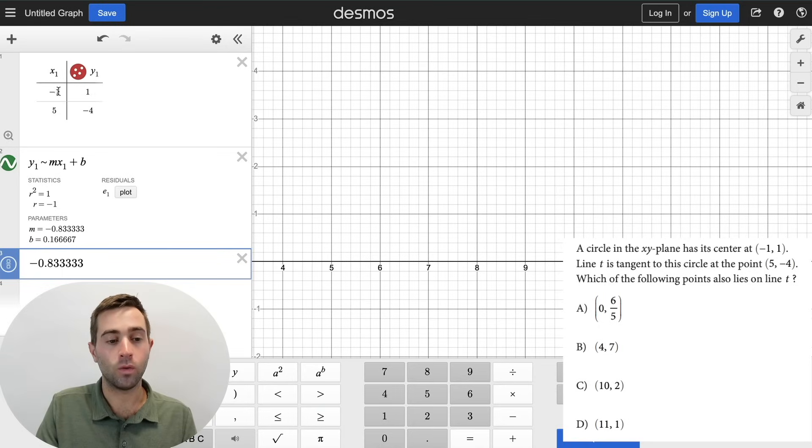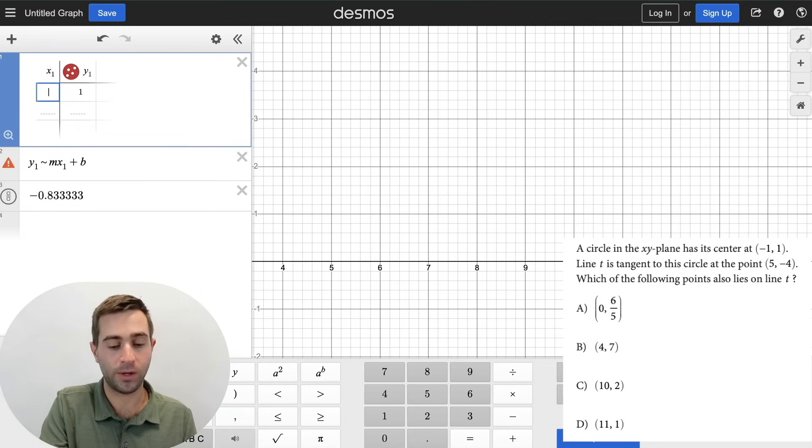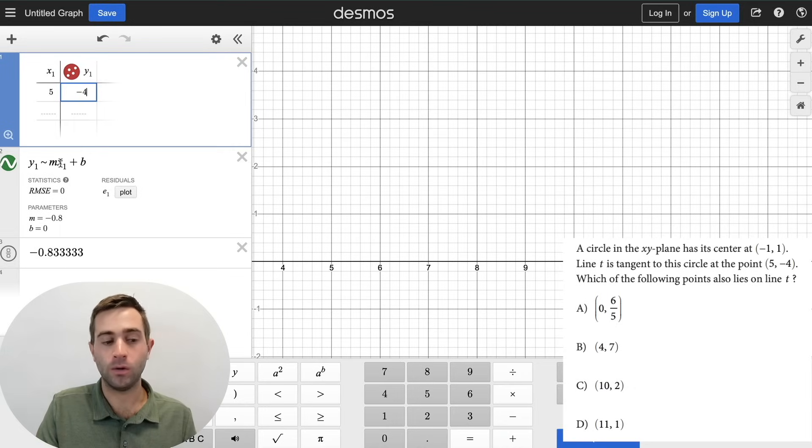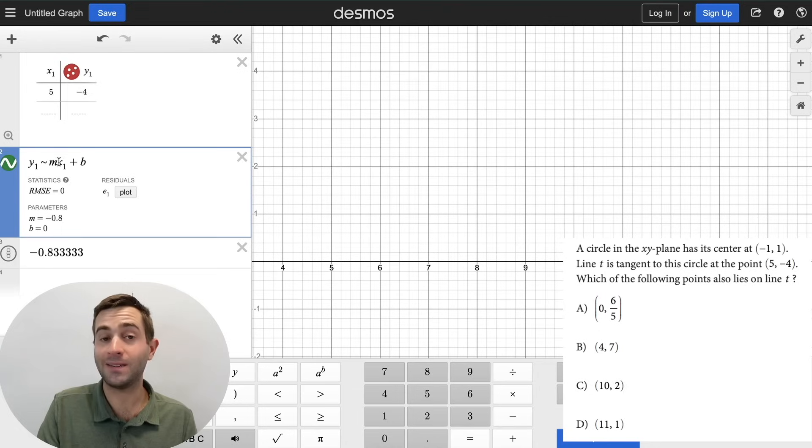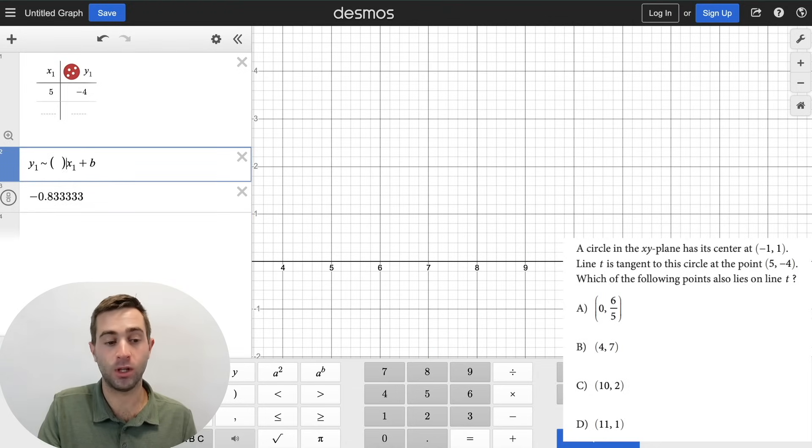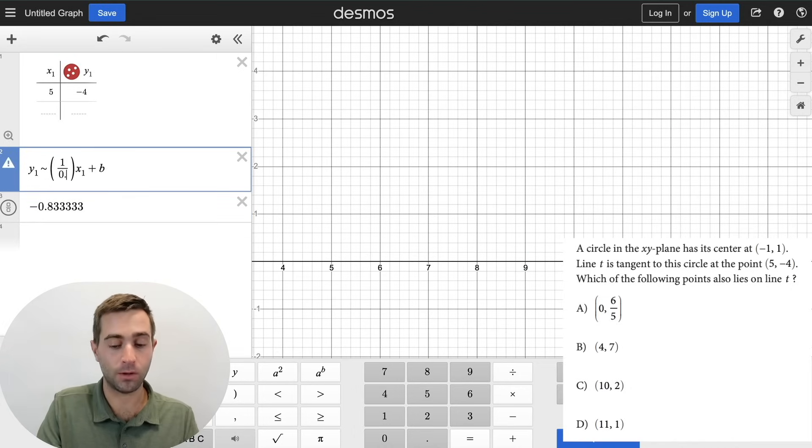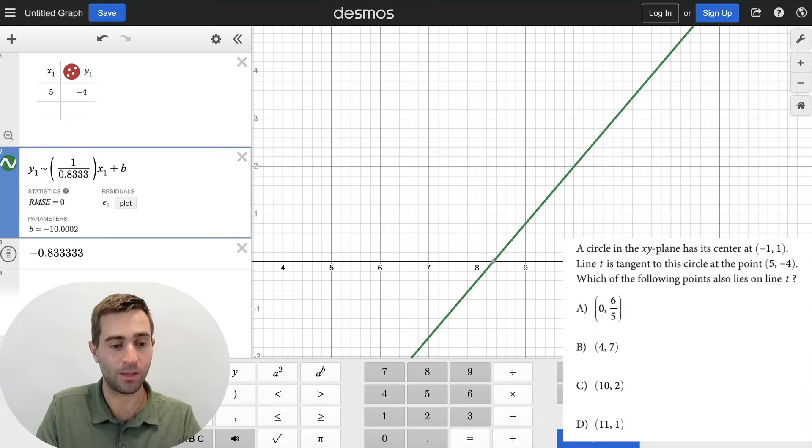Now from here, what we're going to want to do is we're going to want to go ahead and remove those two points. And so Desmos can solve for the new line so we can figure out what point is on the new line. We're going to enter in that point 5 comma negative 4. Now Desmos isn't going to work properly unless we give it the slope if we only have one point. But we know the slope is the negative reciprocal of our original slope. Our original slope was negative 0.83333. So now we're just going to flip the sign, so it's going to become positive, and we'll flip the fraction, so it's going to become 1 over 0.83333.